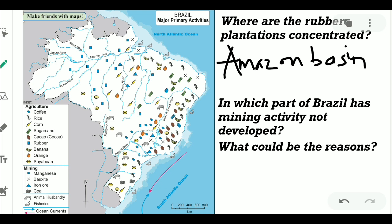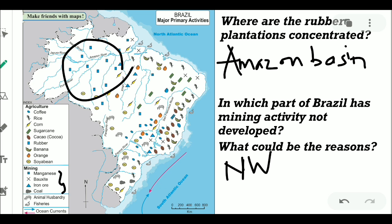In which part of Brazil has mining activity not developed, and what could be the reasons? The mining sector is not developed in the north-western part of Brazil. The reasons are: lack of minerals in that area, and the presence of dense equatorial forest and the Amazon basin.